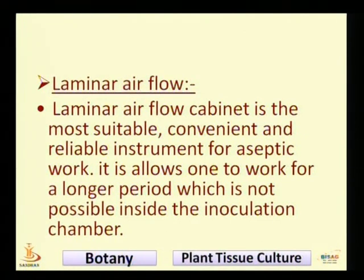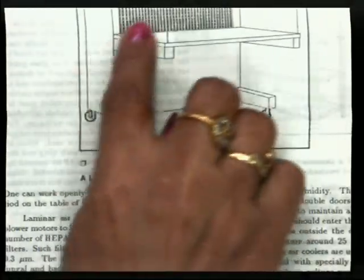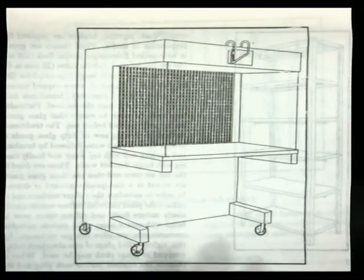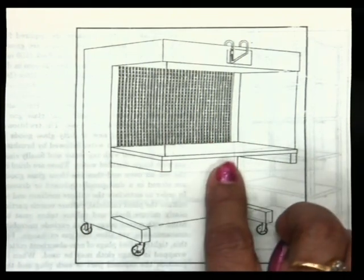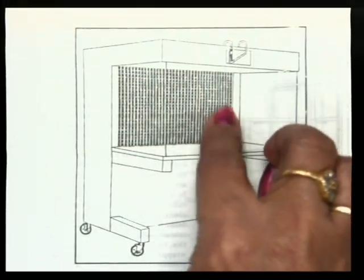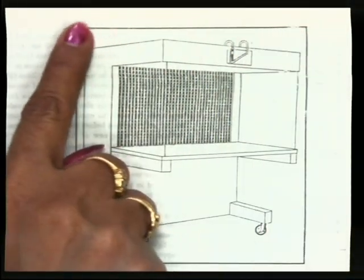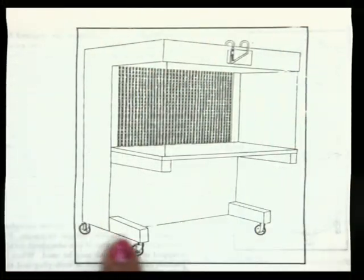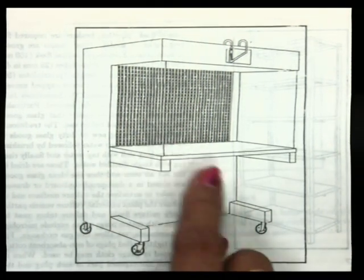Here is the figure of the laminar air flow. It is a glass-based structure with a net-like condition at the back and a roof on the upper side. The instrument is known as a laminar air flow, with air coming out from the front through a net-like arrangement.